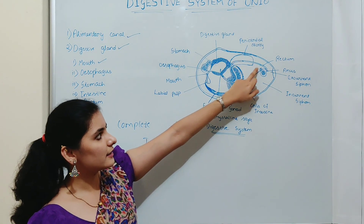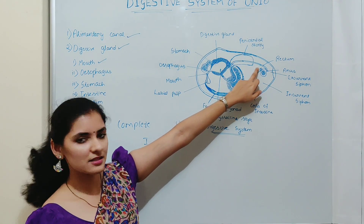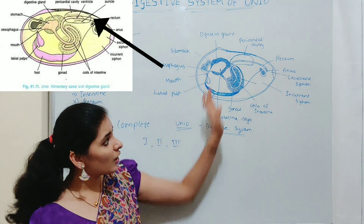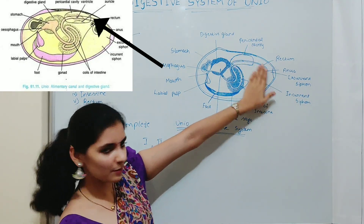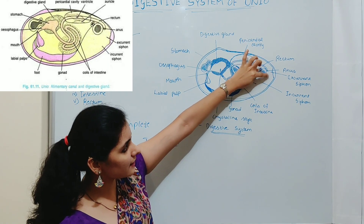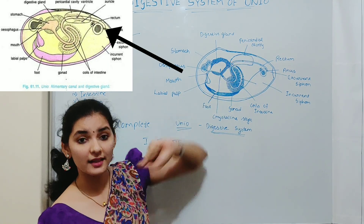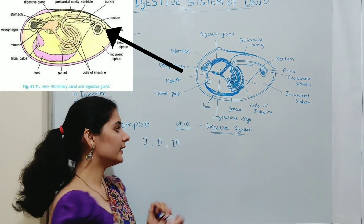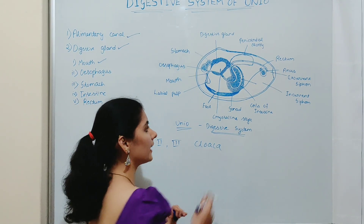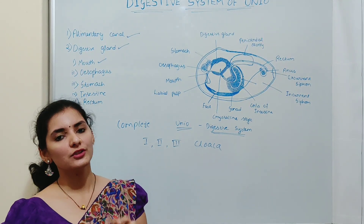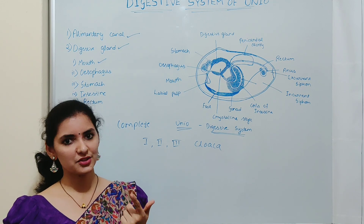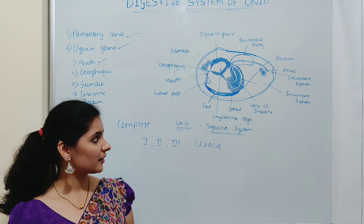The intestine leads to the last region, the rectum. The rectum moves backward toward the posterior position and opens into the excurrent siphon by way of the anus. It thereby acts as a cloaca, serving as a common opening for the passage of reproductive, digestive, and excretory products.